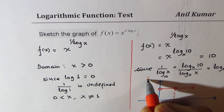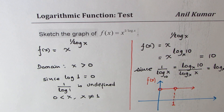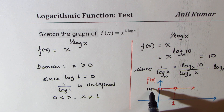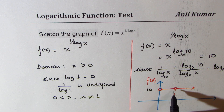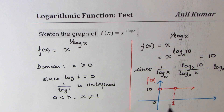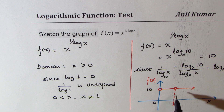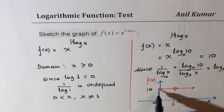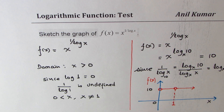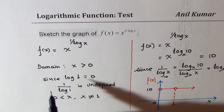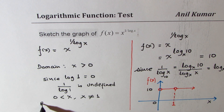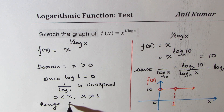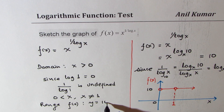Do you see that? So that is how you sketch this particular function. The graph of the function has two holes — one at the origin and the other at x equals 1. The range of the function is 10. So we have already written the domain. The range of f of x will be y equals 10.